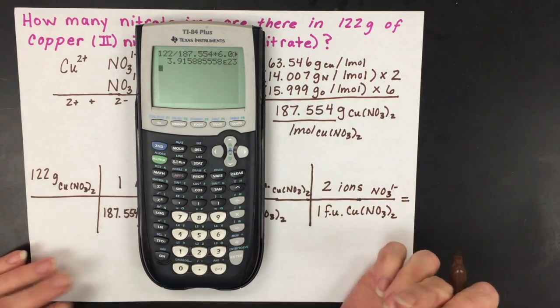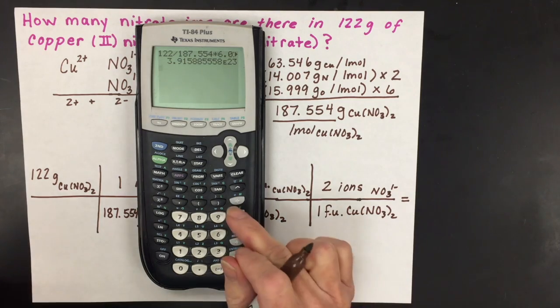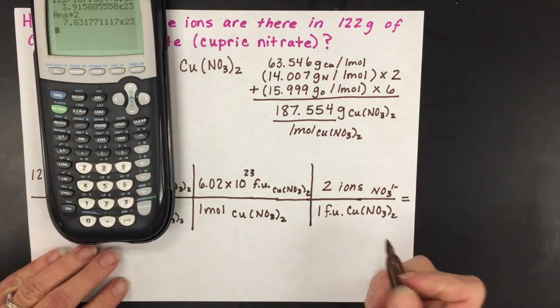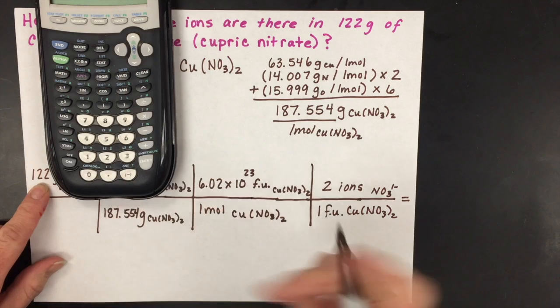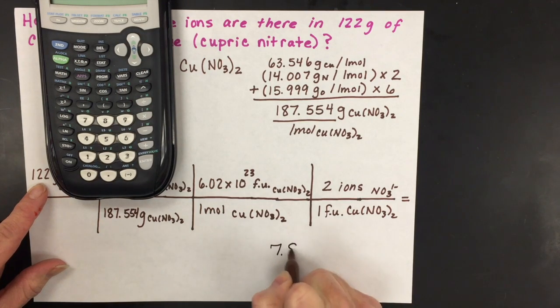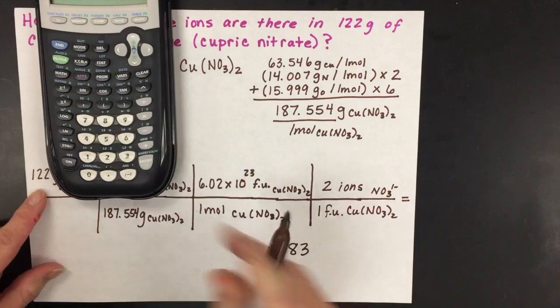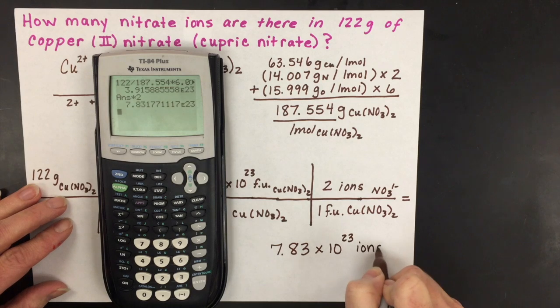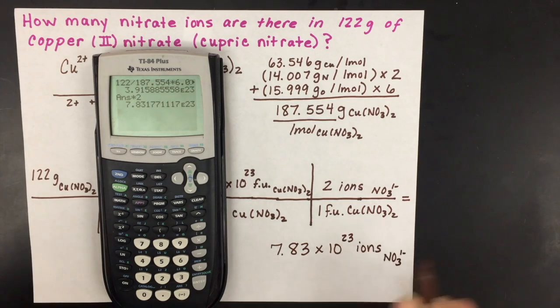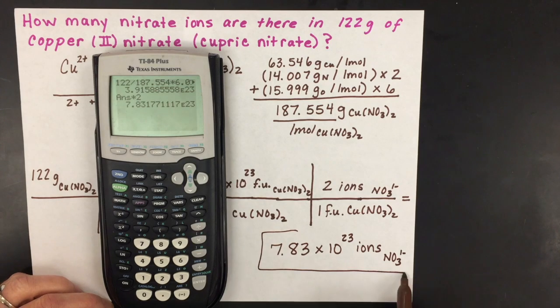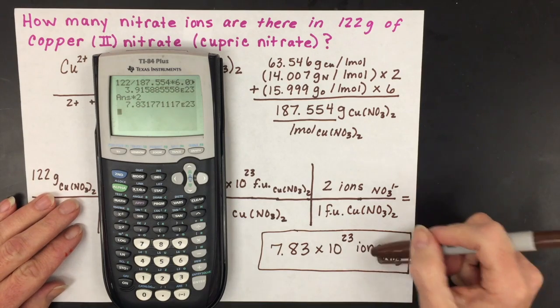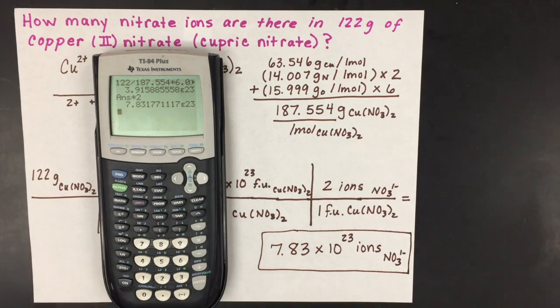That would be our answer if we stopped at formula units, but we multiply it by 2 because for every one formula unit, we get two ions. We have three significant figures in this problem, so our answer is 7.83 times 10^23 nitrate ions, with the correct significant figures, scientific notation, label, and unit.